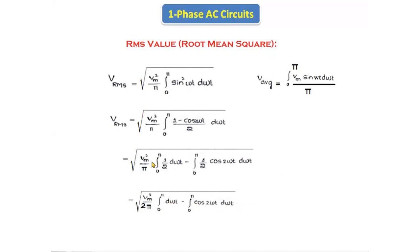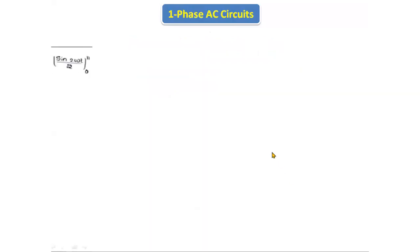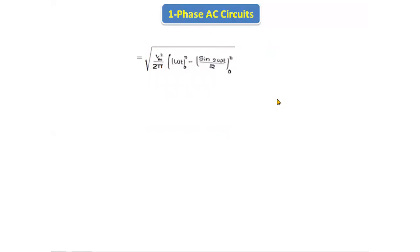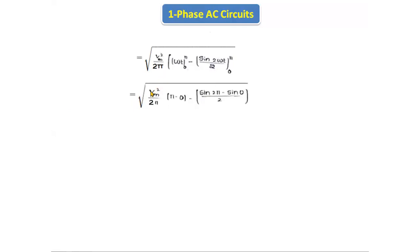With the 1/2 factored out, we have Vm²/2π. Applying the integration: the integral of a constant dωt gives ωt evaluated from 0 to π, and the integral of cos(2ωt) is sin(2ωt)/2, also evaluated from 0 to π.